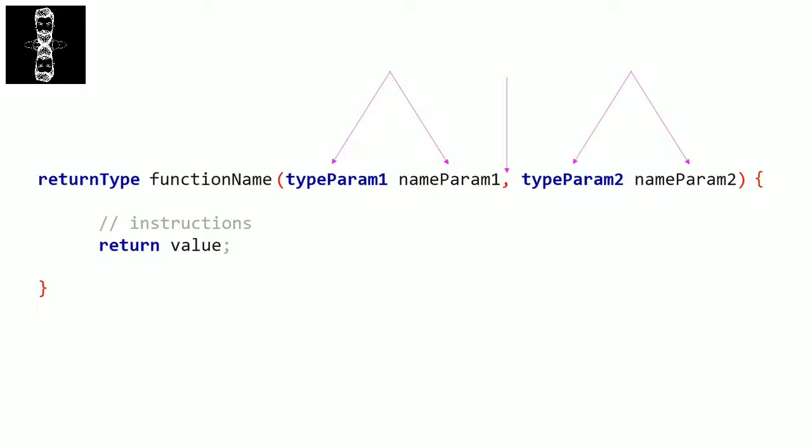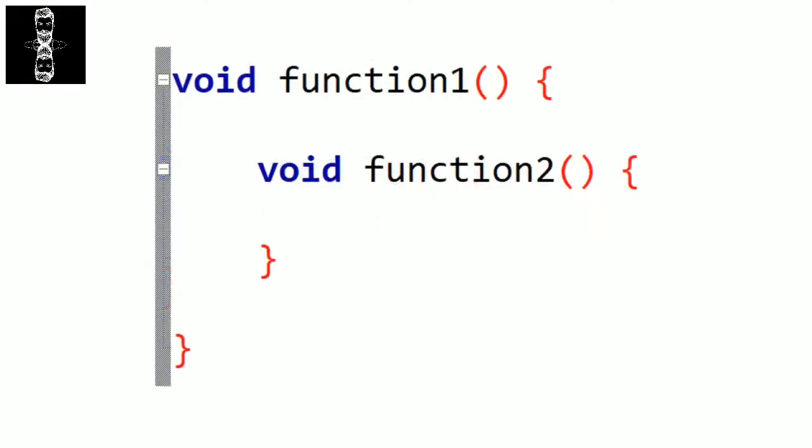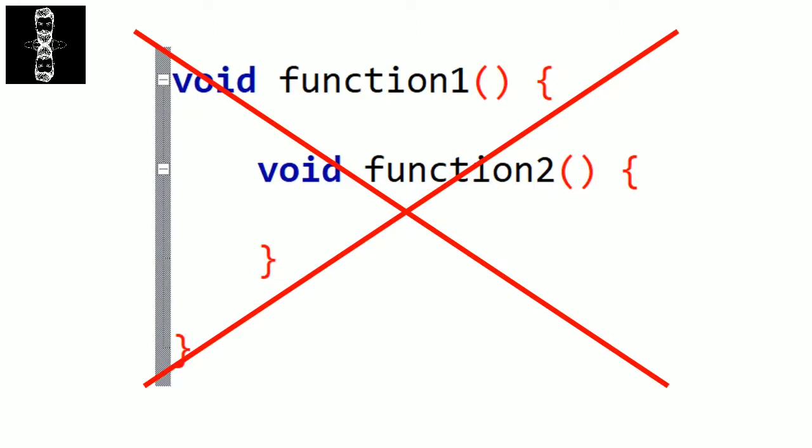Last thing in this video, we'll talk about the position of a function in the program. Every C program contains at least one function, which is the main function — the program wouldn't run without it. Also note that we can't create a function inside another function. So for example, if we have the main function and want to create another one, it must be outside.